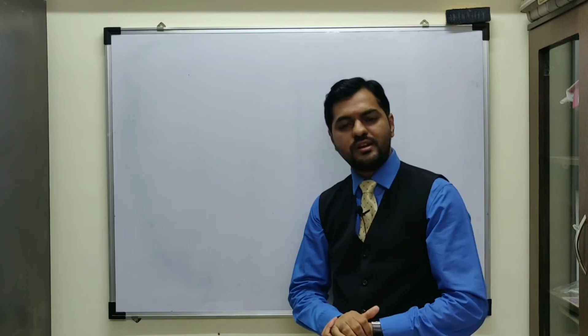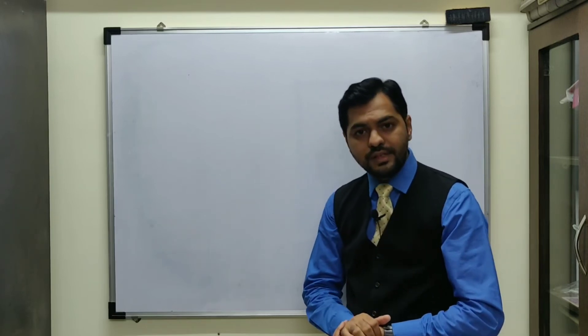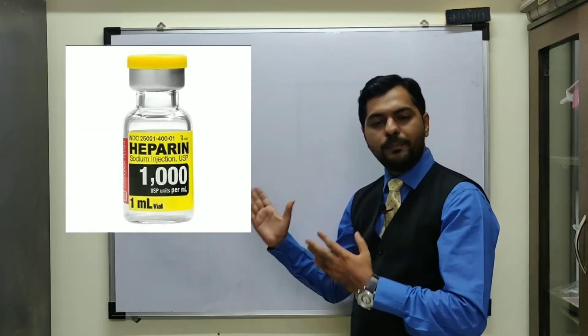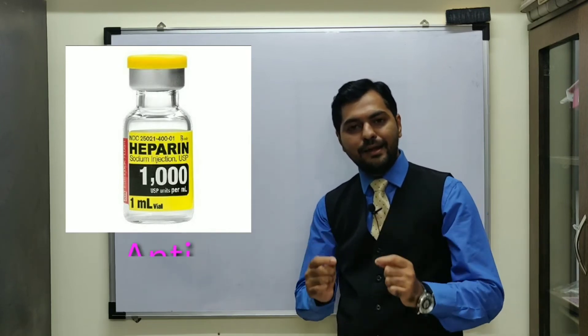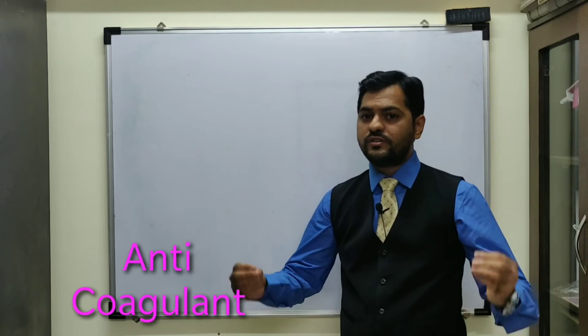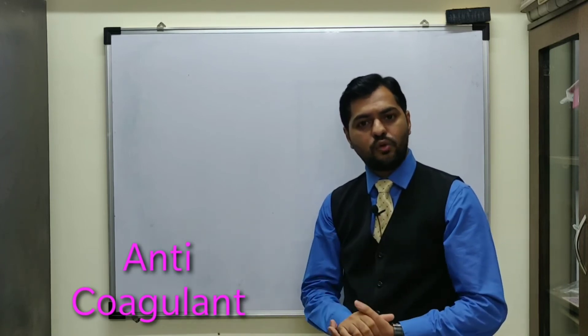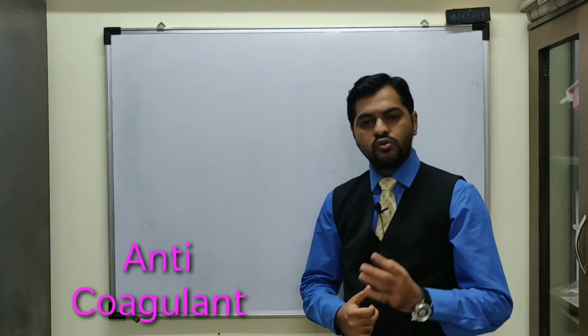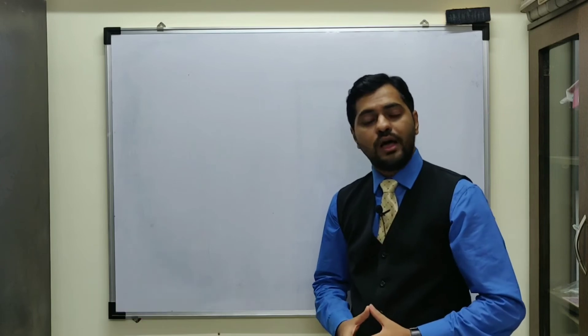Another substance secreted by basophils is heparin. Heparin serves as an anticoagulant which keeps the blood in fluid state. This is one of the natural anticoagulants present in the blood. So we have discussed the three types of granulocytes.